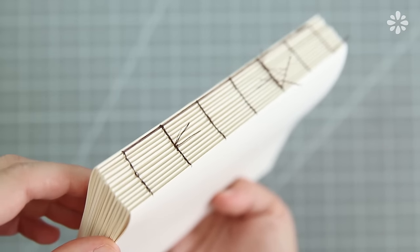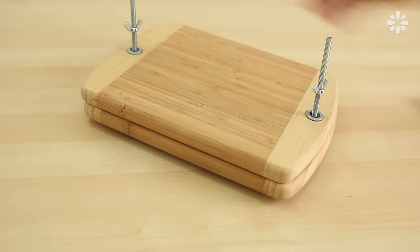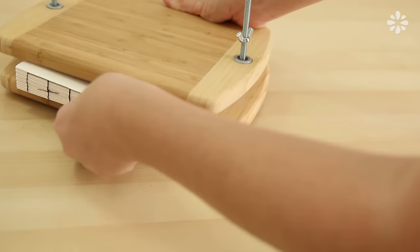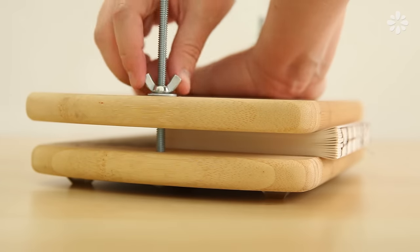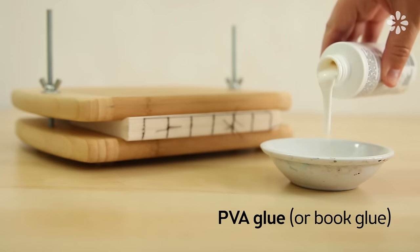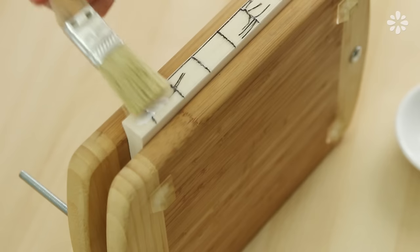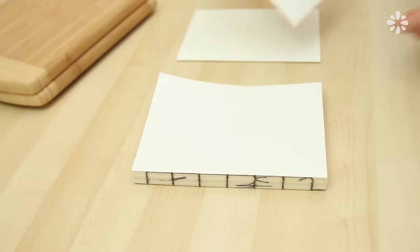I'll be using my DIY book press for this, but you can also use heavy weights or a vice. Press the book, making sure all of the signatures are aligned and straight and then brush on a coat of PVA glue. After that first coat is dry, apply one more coat and then let that dry.